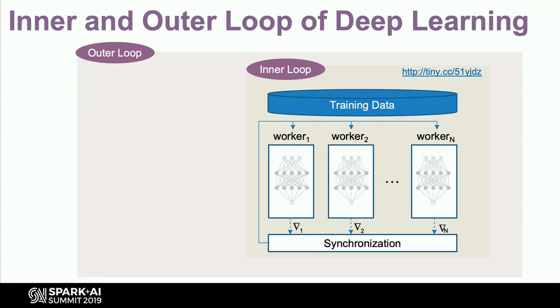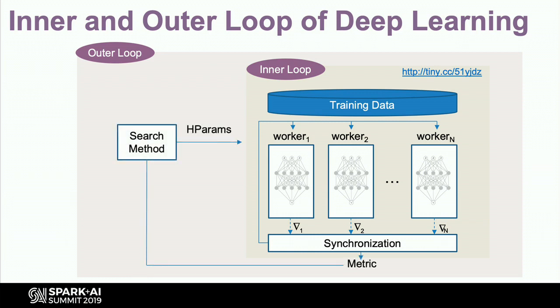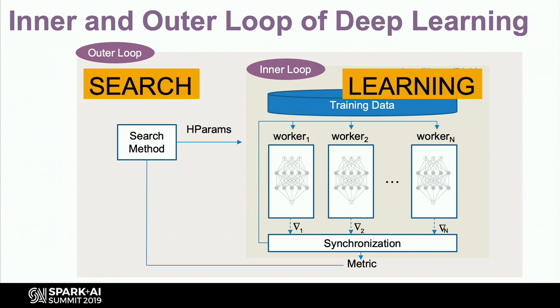What we're going to talk about today in more detail is the outer loop — how do we find good hyperparameters when training models? That typically requires you to search for hyperparameters. You can search by doing random search, undirected search, or directed search. Spark is okay for learning but not great for search — so how do we do it?